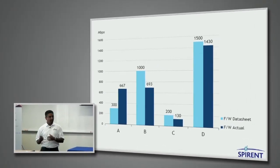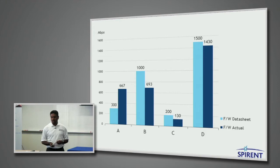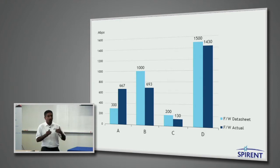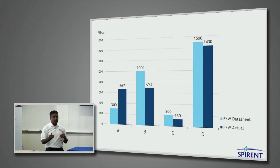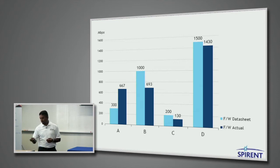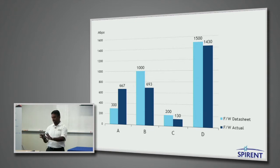Here it shows what were the data sheet claims of those four vendors, and here was the actual performance. In some cases, the performance was actually higher than what the data sheet claims were — perhaps the data sheet configuration was more stressful on the system, or there was a hardware or software enhancement that improved performance. But for some cases it was slightly lower. The picture still looks okay if you picked any one of those vendors based on the initial number.